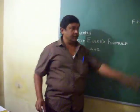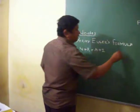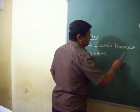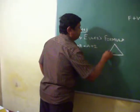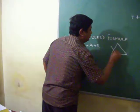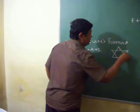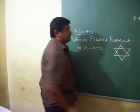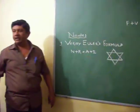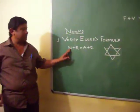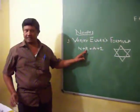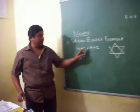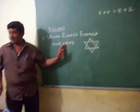Now let us go to a network first. If you take a network, let us take a star. In this star, how many nodes are there? How many regions are there? How many arcs are there?